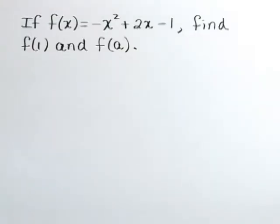If f of x is equal to negative x squared plus 2x minus 1, find f of 1 and f of a.